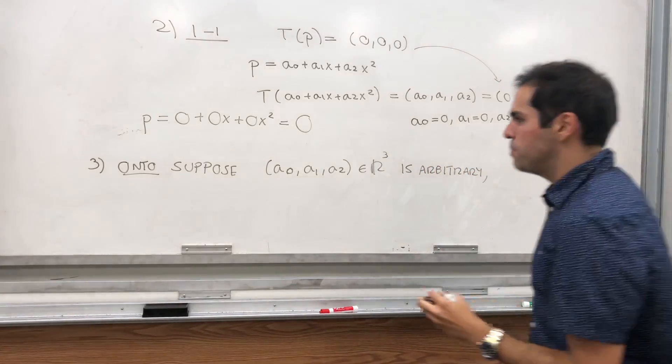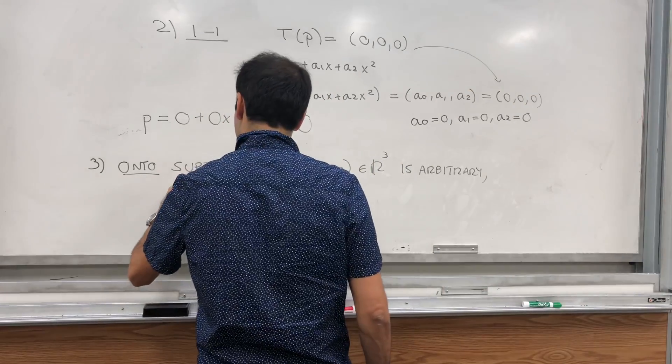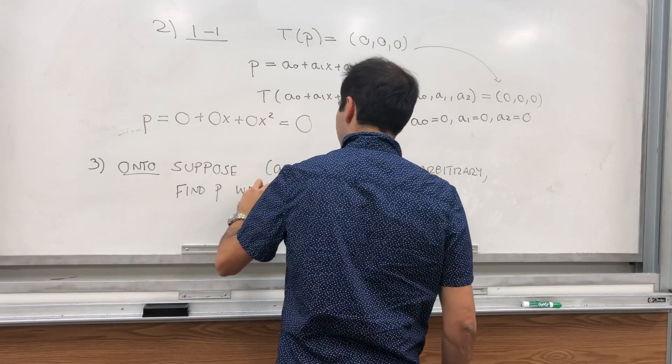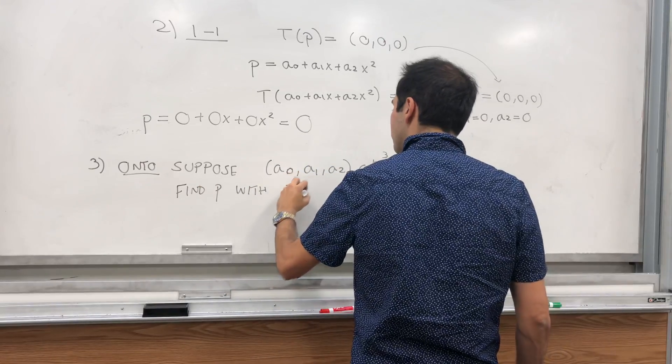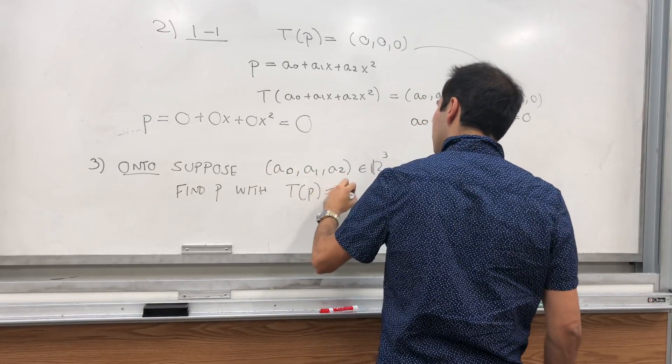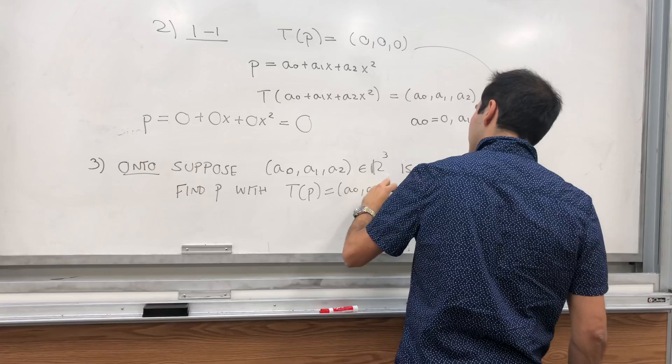And then just find P, with T in the space, which with T of P equals (a0, a1, a2). But then what is P?